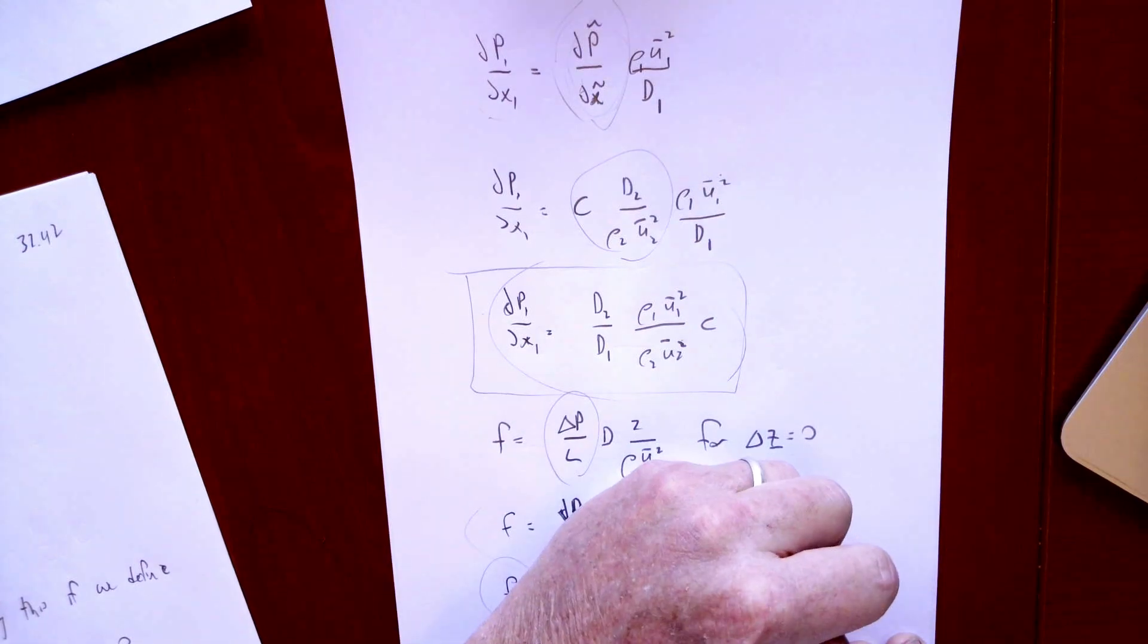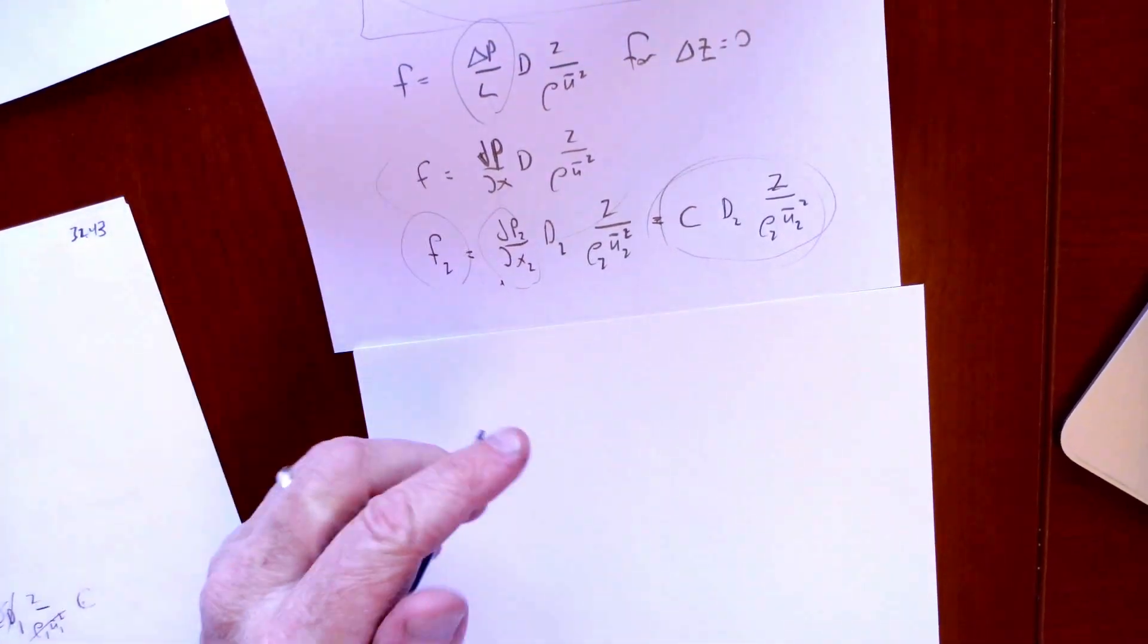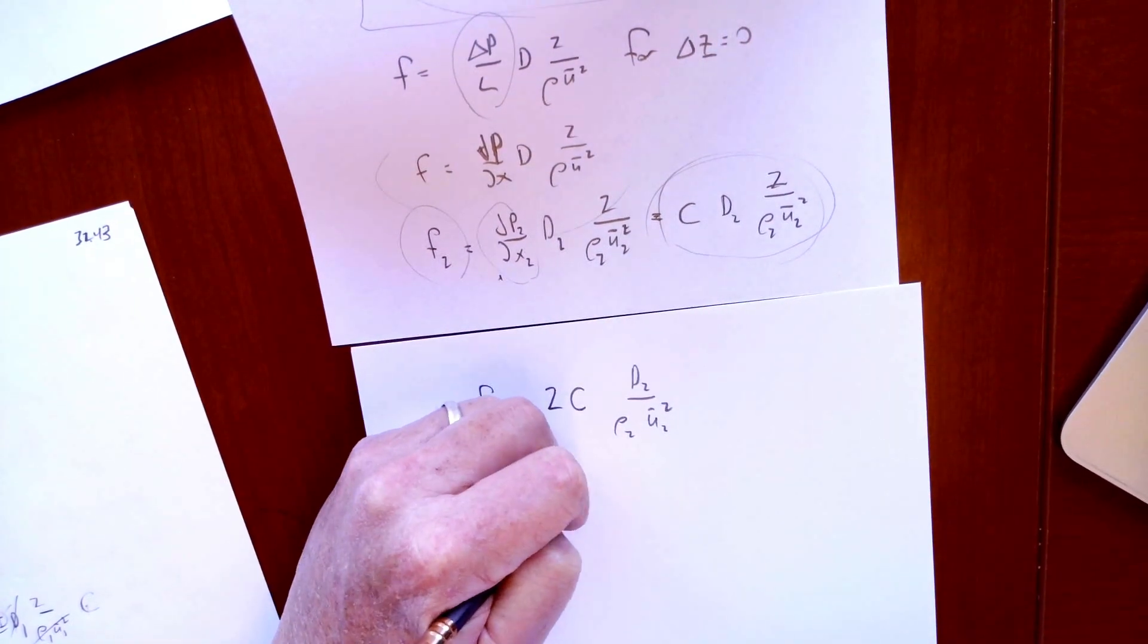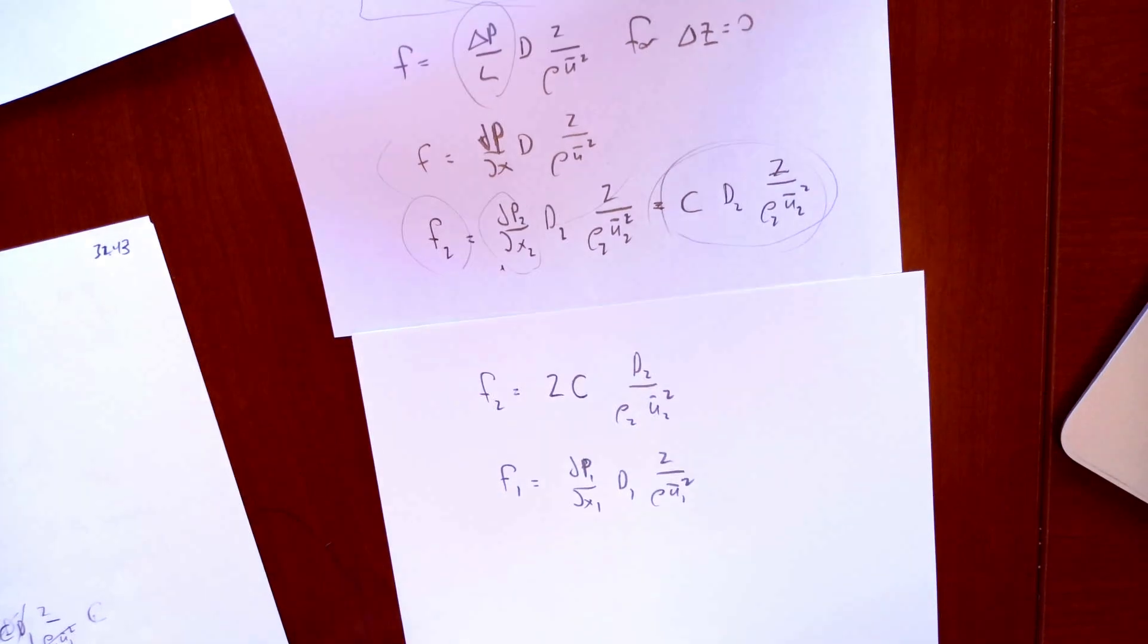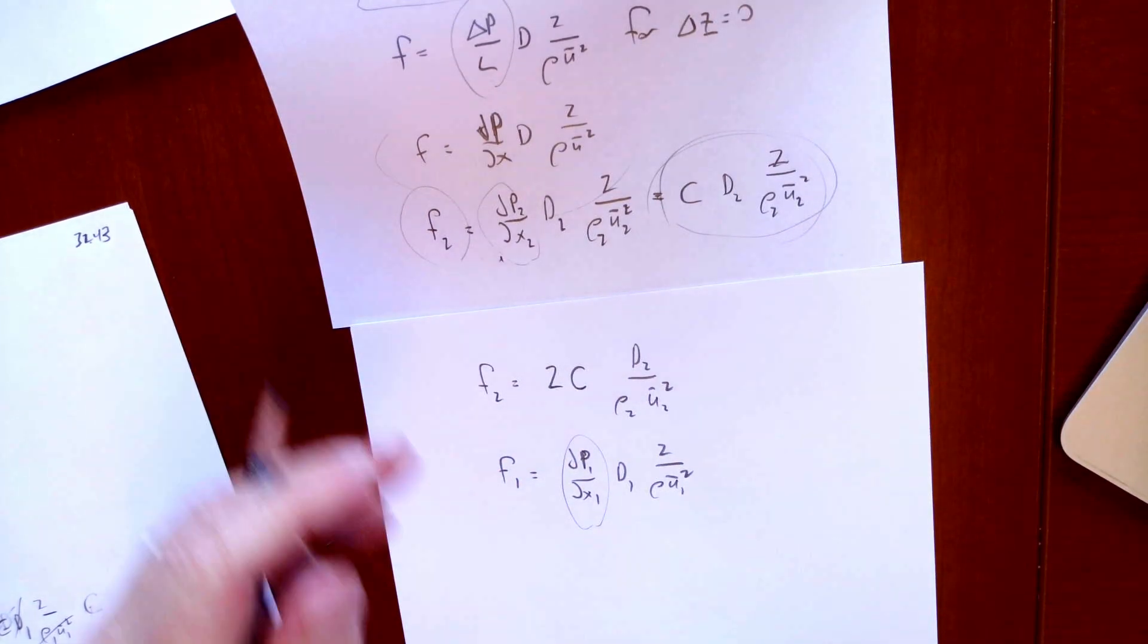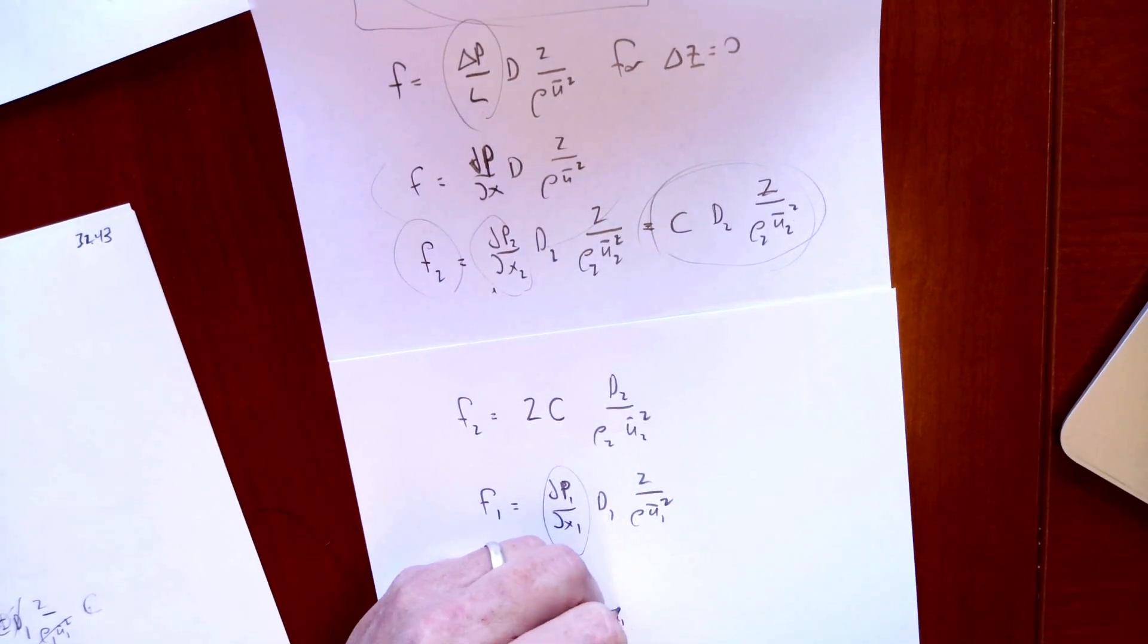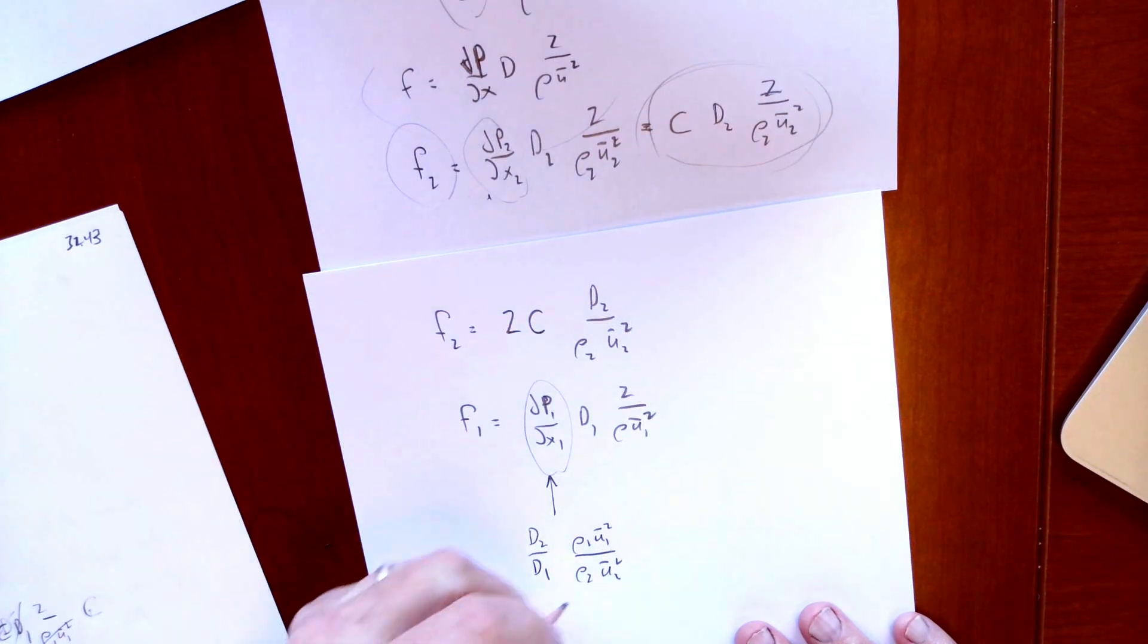So that's f2 based on the measurements that we made with our experiment. Now we say, how does that relate back to f1? So f1 is DP1/DX1 times D1 times 2 over ρ1U1 squared. Same definition, basically. But now, I'm going to plug in for DP/DX1 the answer that we found before. So what I'm going to plug in here is D2 over D1 times ρ1U1 squared over ρ2U2 squared, that came from our solution of the dimensionless equations, and this is times C.